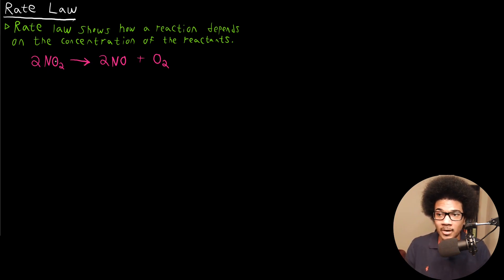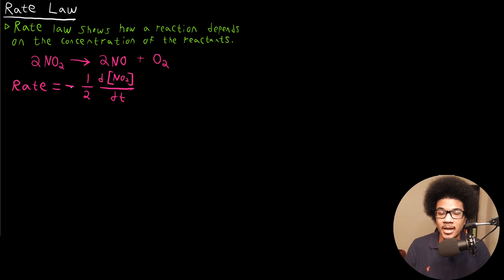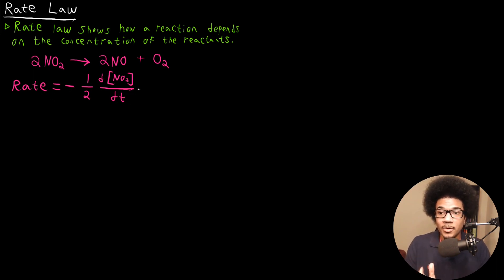I want to bring back this chemical equation that we were looking at in the previous video — the decomposition of NO2 into nitrogen monoxide and oxygen gas. Looking back at this process, in the last video we said the rate of this reaction is going to be related to the disappearance of the reactants. So it's going to be negative one half the rate of change of the concentration of NO2 over time. We put this negative sign here because NO2 is a reactant — it's going to be disappearing as this reaction proceeds, so we put this negative sign here to compensate so that the rates are always positive.